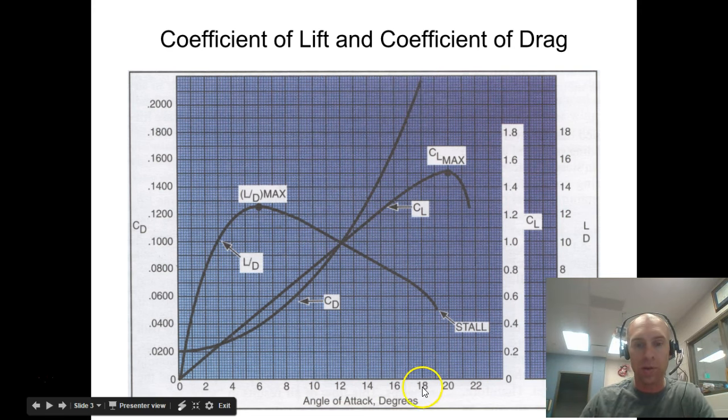Once we get up to about 18 degrees, coefficient of drag has reached the top of this scale. But when we divide lift by drag, you get the greatest differential right around 6 degrees, and that's going to be our most efficient lift.